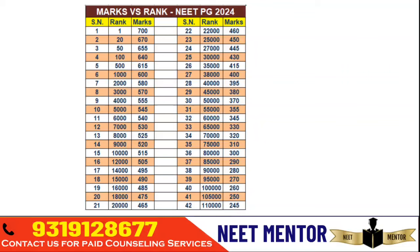A score of 345 gives around 60,000 rank; 320 around 70,000; 300 around 80,000; 290 around 85,000; 270 around 95,000; and 260 around 1 lakh. The qualifying score would be around 250, plus or minus 10 — so it could be less than 250 or around 260. Up to 90 percent of cases will follow this mapping.